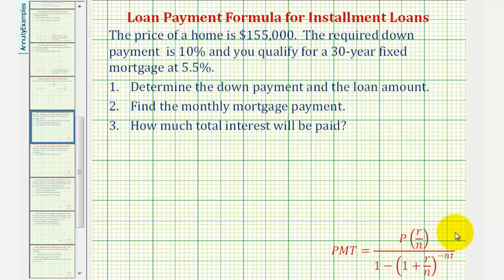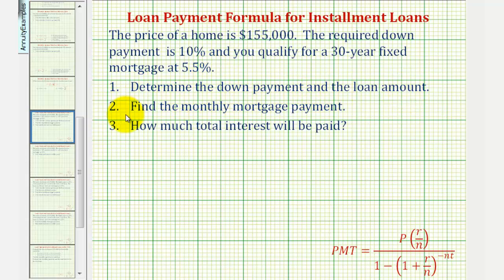Welcome to an example of determining the monthly loan payment for a mortgage. The price of a home is $155,000. The required down payment is 10 percent, and you qualify for a 30-year fixed mortgage at 5.5 percent. We want to: (1) determine the down payment and the loan amount, (2) find the monthly mortgage payment, and (3) determine how much interest is paid over the life of the loan.